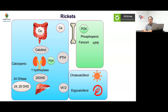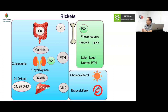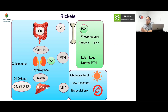Conditions causing phosphopenic rickets include generalized tubular dysfunction like Fanconi syndrome or a more specific problem like hypophosphatemic rickets. These present with late-onset lower limb abnormalities and normal PTH. Vitamin D problems can arise from low sunlight exposure or low calcium intake — calcium is very important and often overlooked.